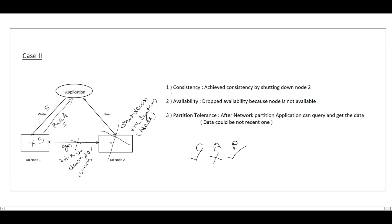So in Case 2, we achieved consistency by shutting down node 2, availability is dropped because node 2 cannot respond, and the system is partition tolerant because even with the network partitioned, the application can still query and get data from node 1. Nodes that don't have the latest data are shut down until the link comes back up and data is replicated. In Case 2, we achieve consistency plus partition tolerance but give up availability.